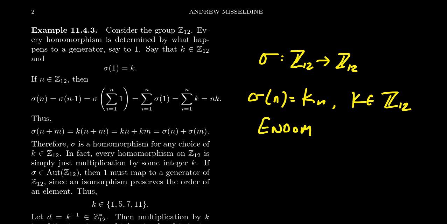An endomorphism is a homomorphism from the group back into itself. But is it an automorphism? An automorphism is an endomorphism which is bijective — that is, also an isomorphism. So we have to investigate: under what conditions will sigma be bijective?